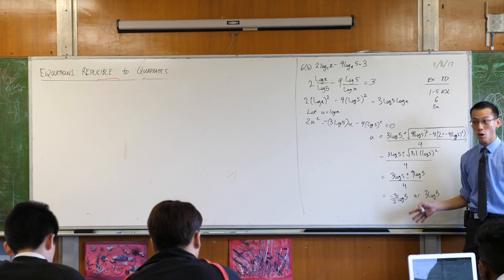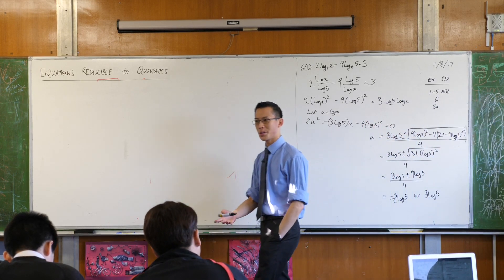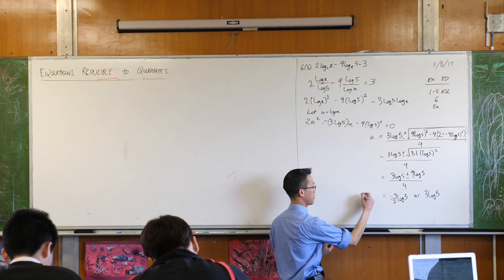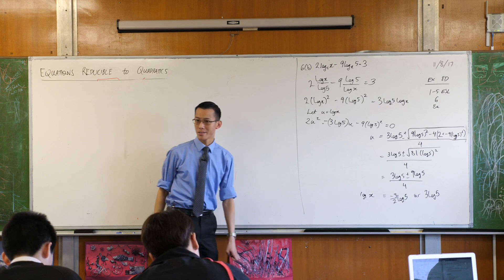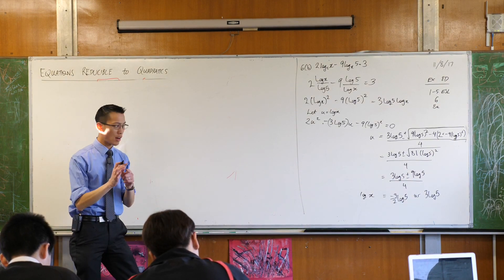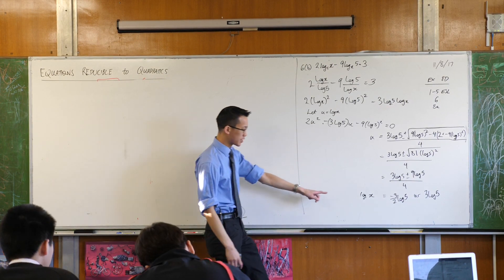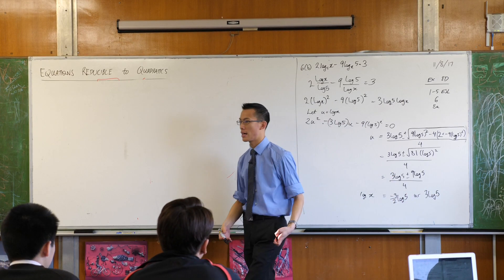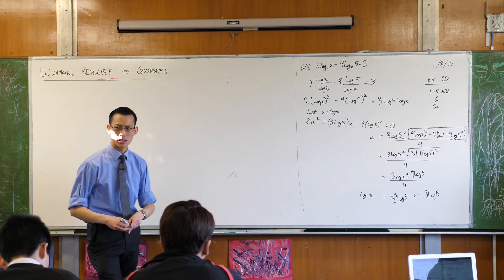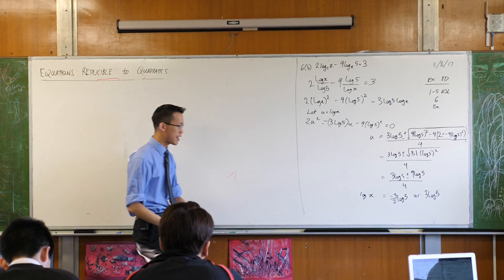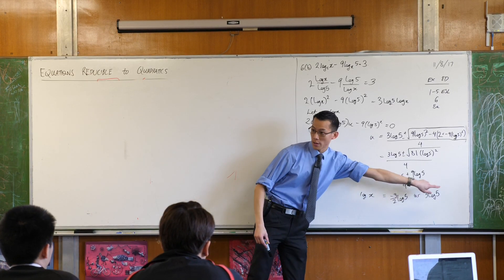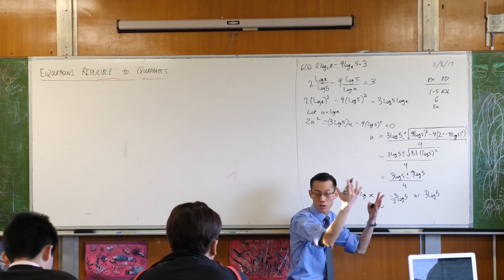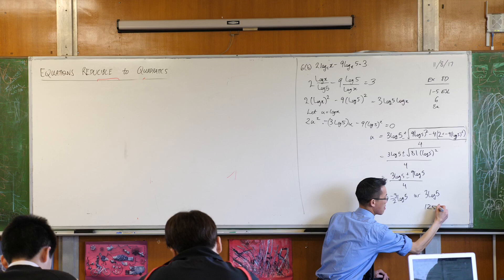Okay, now I've just solved for u, but what was u again? It's log x. Equals. So I'm almost there, I'm like one step away. For example, it's a bit easier to see on say this one, right? 3 log 5, you can write that without the 3 out the front, can't you? What would that be? Log of 125, right? So log x equals log 125, so clearly x must be 125. Like that.